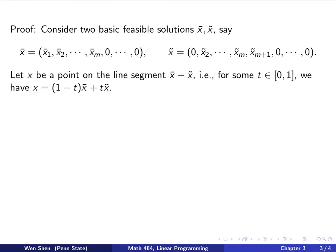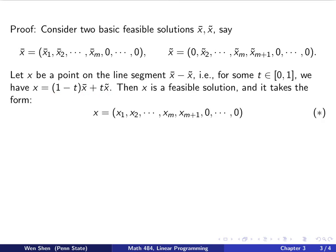Once you have those two points, let's say I pick an x to be a point on the line segment connecting x bar and x tilde. That is, for some t between 0 and 1, we have x equals a convex combination of x bar and x tilde. And then since the set for feasible solutions, the feasible region is convex, then x is also a feasible solution. What form does it take? Well, it will take some form like this.